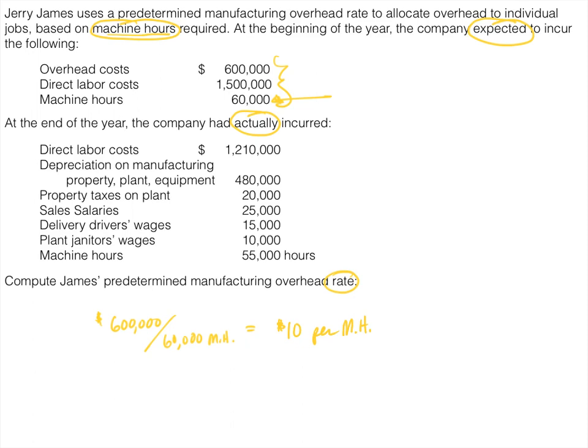When you're calculating these rates, go ahead and write everything out. Don't just write $10. If you write out $10 per machine hour, you already know exactly what you need to multiply your rate by. You know that you're going to multiply $10 times machine hours to get your allocated overhead, so it makes it a little simpler as we move on.